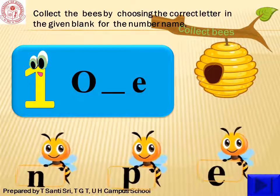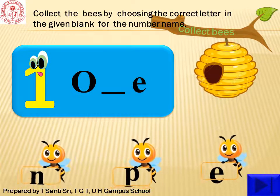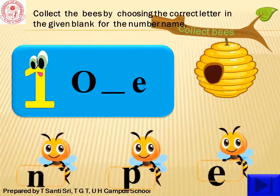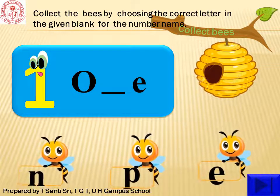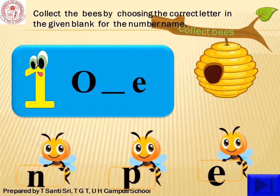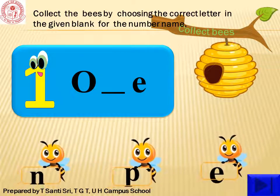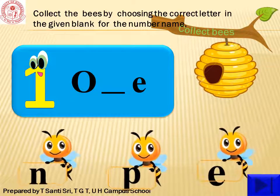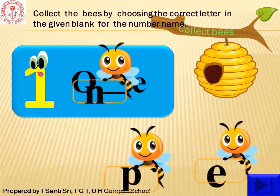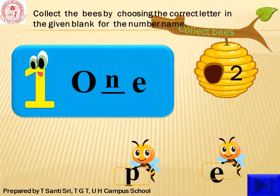What is the number here? One. O-dash-E. What letter will come in this blank? Yes, it's N. O-N-E, 1. Repeat once again: O-N-E, 1.